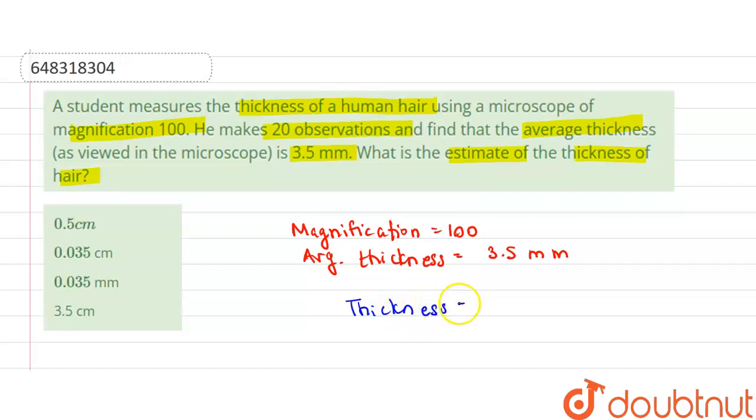Original thickness will be equal to 3.5 millimeters upon 100, and this is equal to 0.035 millimeters.